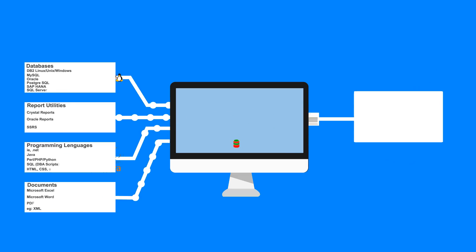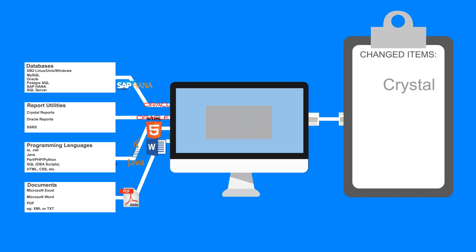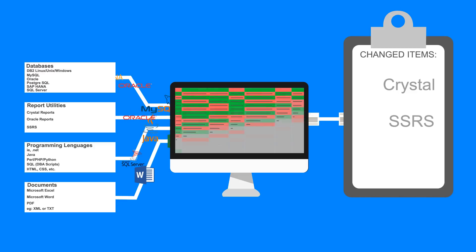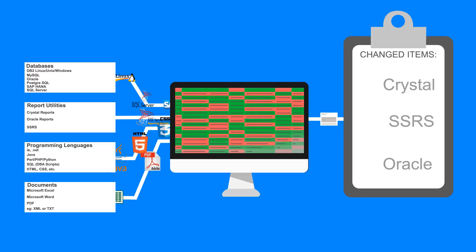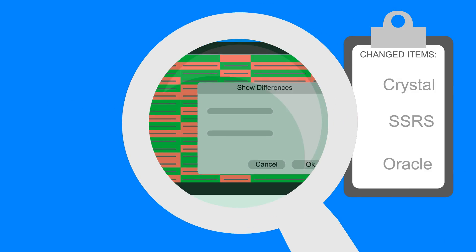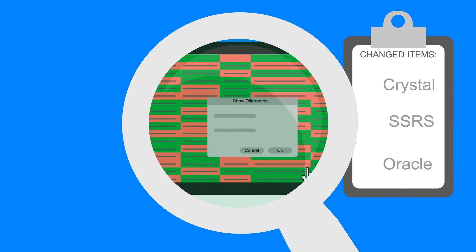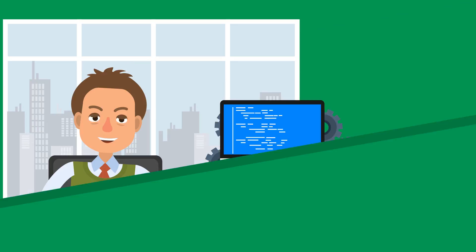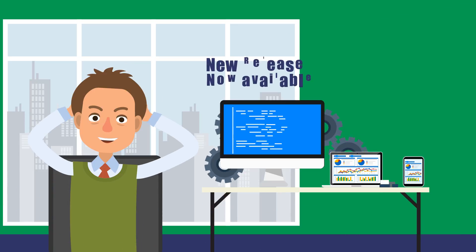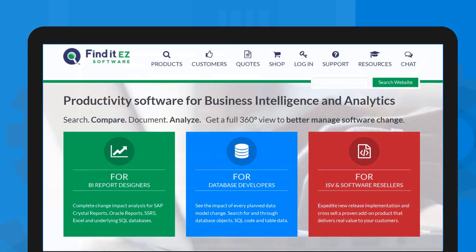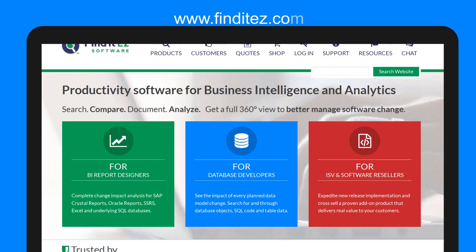Using Find It Easy's Mass Compare, you can pinpoint differences between a new software release and your current production reports, underlying database schema or SQL code, quickly and effortlessly. Find It Easy — Change made simple. Download a free trial to get started today.